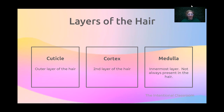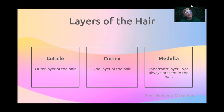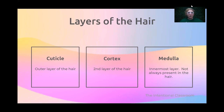Starting with the layers of the hair — we're going to start inside. We have a cuticle layer, which is the outer layer of the hair. We have the cortex, which is the second layer, in between the cuticle and then the medulla, which is the innermost layer of the hair, but it's not always present. These three layers of the hair are what we are looking at whenever we do things like hair color or texture, even when we style it or wet and dry it.